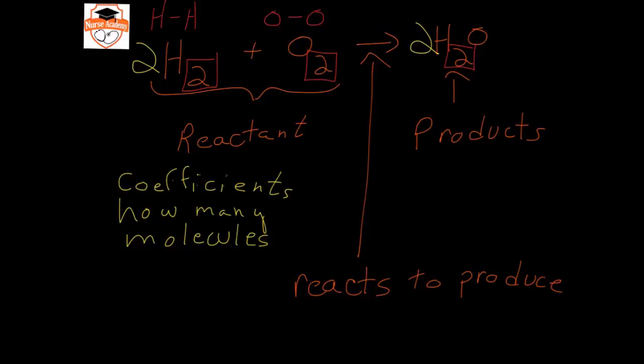Actually, in this case, there is more than one covalent bond between these two oxygen atoms. When we're talking about water, water would be one oxygen bound to two hydrogen atoms. So the subscript tells us how many of each atom are in one molecule, where the yellow numbers or coefficients tell us how many molecules there are that react with another set of molecules to produce a set of products.